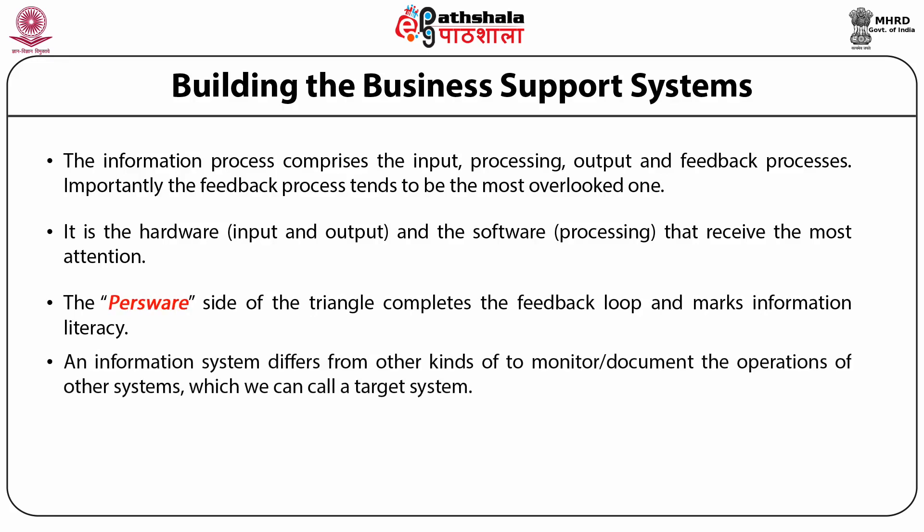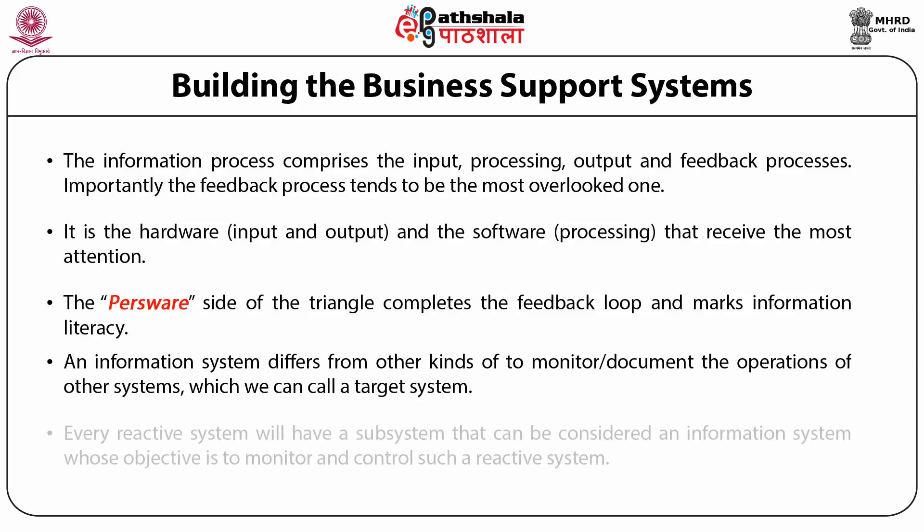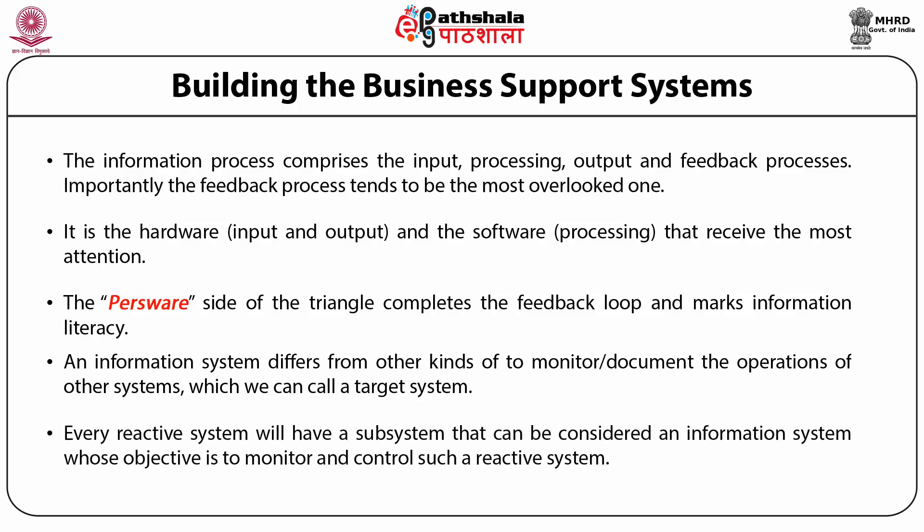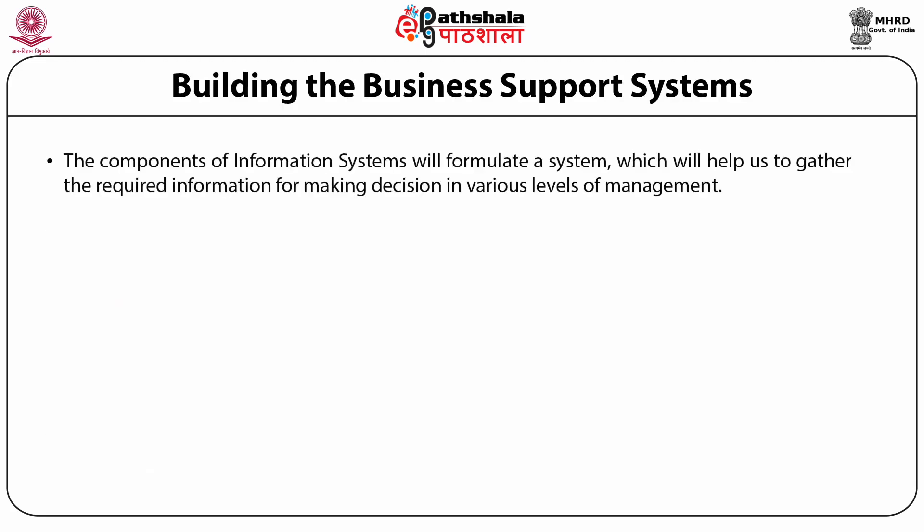An information system differs from other kinds of systems in that it is used to monitor documents and the operations of other systems, which we can call a target system. An information system cannot exist without such a target system. Every reactive system will have a subsystem that monitors and controls it. The components of an information system help us gather the required information for making decisions at various levels of management.